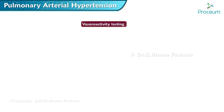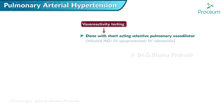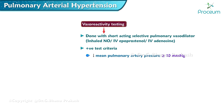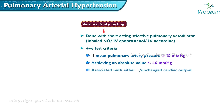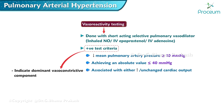Vasoreactivity testing is done with short-acting selective pulmonary vasodilators like inhaled nitric oxide, intravenous epoprostenol, or intravenous adenosine. For a test to be considered positive, it must meet the following criteria: reduction of mean pulmonary artery pressure greater than or equal to 10 millimeters of mercury, achieving an absolute value of less than or equal to 40 millimeters of mercury.